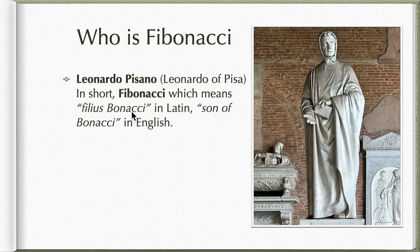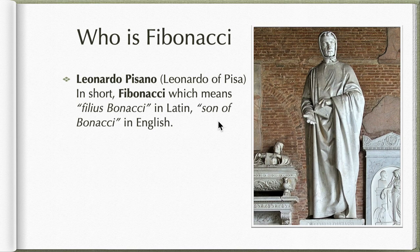Which means Filius Bonacci in Latin — son of Bonacci. In English, they tend to introduce themselves using the names of their father. So Fibonacci is the son of Bonacci. For example, McNemar means you are the son of McNemar, and McDonald means the son of Donald — things like that. Fibonacci is a short form in Latin.